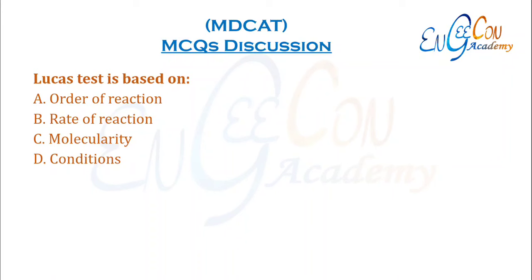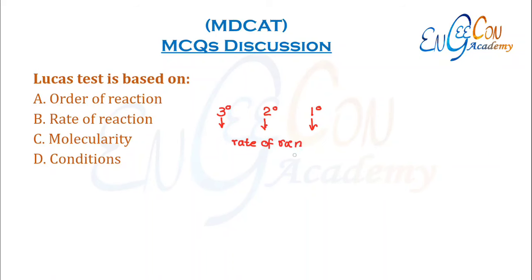Lucas test is used to differentiate between tertiary, secondary, and primary alcohols. Tertiary alcohols react immediately. Secondary alcohols react in 5 to 10 minutes. Primary alcohols react only on heating. So this test is based on the different rates of reaction of different types of alcohols with the reagent — it is based on rate of reaction.